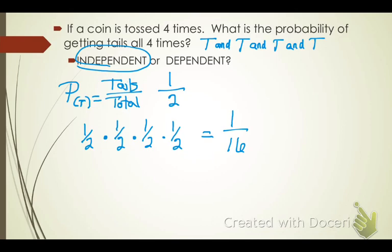Every time you find probability, I want you to give a reduced fraction, a decimal rounded to two decimal places, and a percent. So one-sixteenth would be 0.06 and 6 percent.